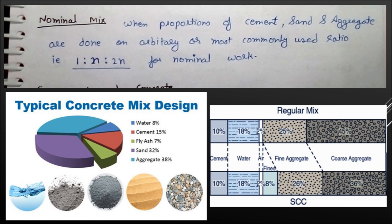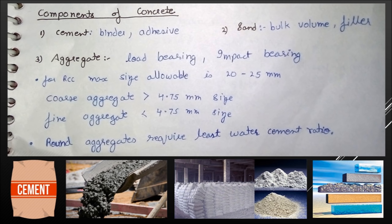Now discussing the components of concrete. First is cement, which is the binder and works as an adhesive. Second is sand, which provides bulk volume and works as filler material. Third is aggregate, which is the main important part. It bears loads and impact. We have coarse aggregate which are more than 4.75 mm and fine aggregate which are below 4.75 mm.